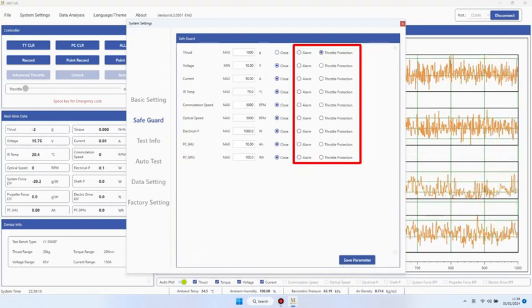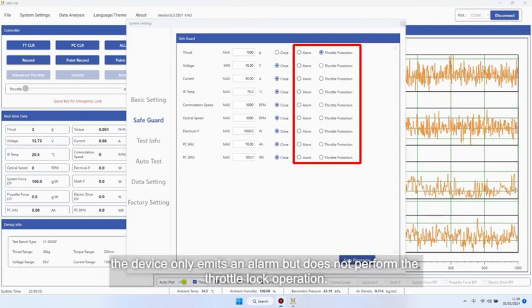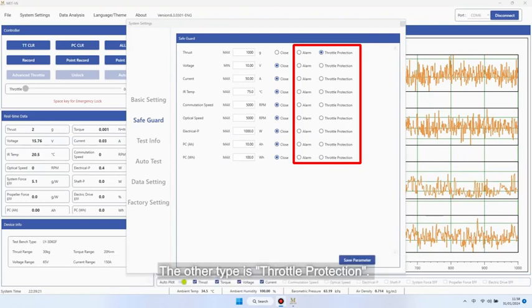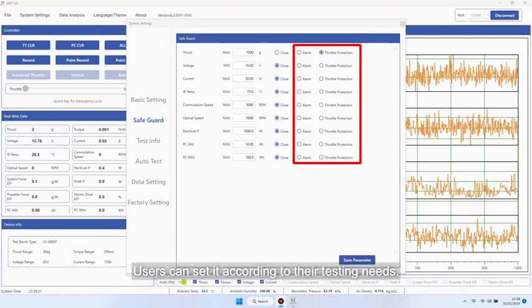One is alarm. When the test value reaches the protection value, the device only emits an alarm but does not perform the throttle lock operation. The other type is throttle protection. When the test value reaches the protection value, the device will alarm and execute the throttle protection program. Users can set it according to their testing needs.